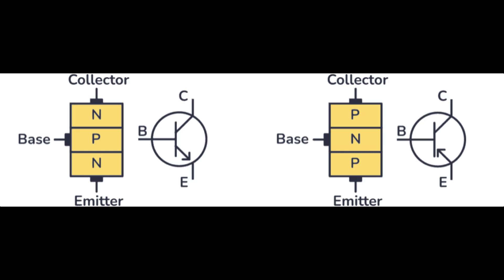Each semiconductor region is connected to a terminal, appropriately labeled: emitter (capital E), base (capital B), and the collector (capital C).